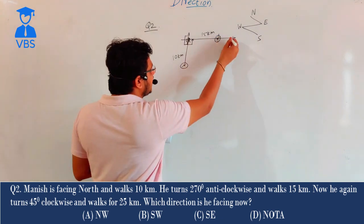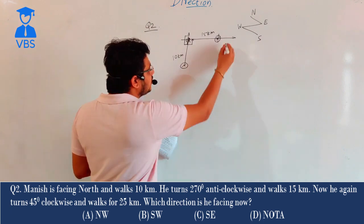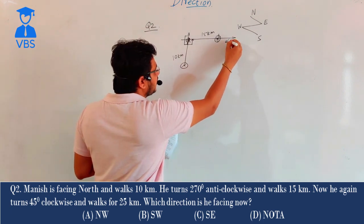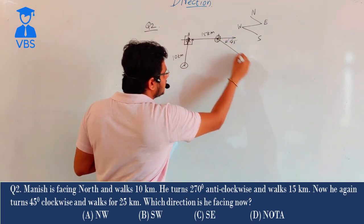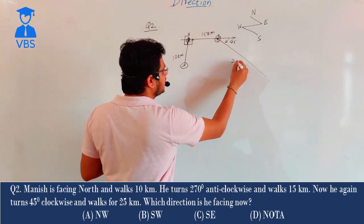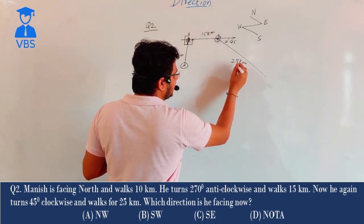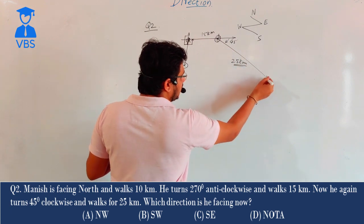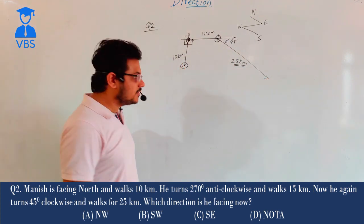This direction when facing is clockwise, he turns clockwise. How many degrees? 45 degrees. So, tell us the final phase. He has traveled here 25 km. So he has to know that this direction is what he is.